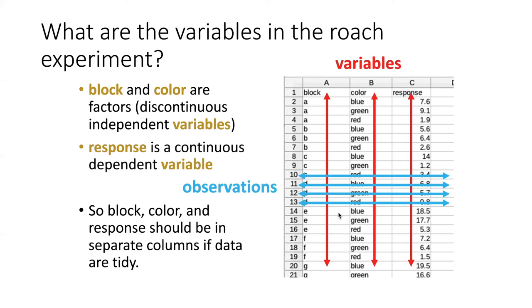Then the response variable, which is essentially the data I'm going to record, is given in a particular column here, which I've called the response column. Each of these three variables—the two independent variables I'm controlling and the dependent variable I'm measuring—each gets its own column.